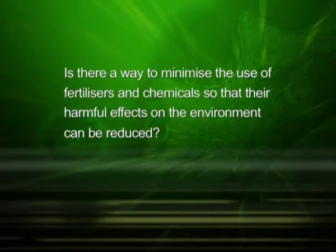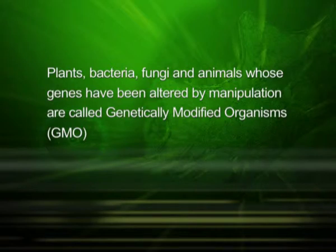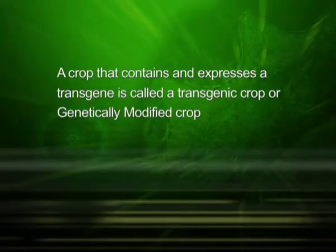Now, we should think about what is the alternative path through which our farmers may obtain maximum yield from their fields, and is there a way to minimize the use of fertilizers and chemicals so that their harmful effects on the environment can be reduced. The possible answer to these questions is the use of genetically modified crops. Plants, bacteria, fungi and animals whose genes have been altered by manipulation are called genetically modified organisms or GMOs. A crop that contains and expresses a transgene is called a transgenic crop or genetically modified crop.